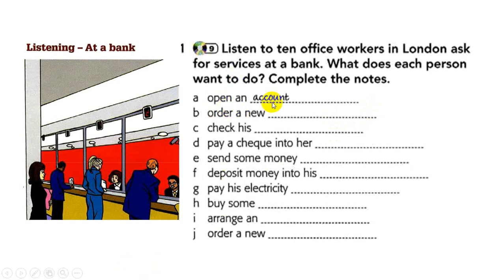A: 'I'd like to open an account, please.' So the first one is solved — an account. B: 'My checkbook has run out. Can I order a new one, please?' So his checkbook has run out and he wants to order a new checkbook.